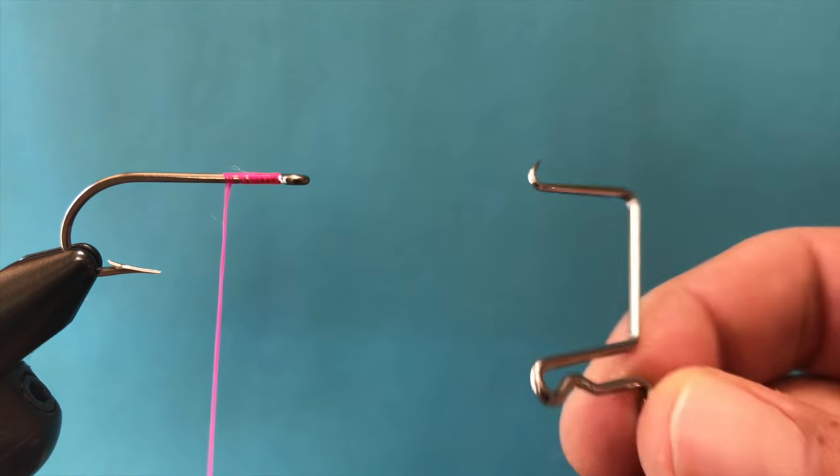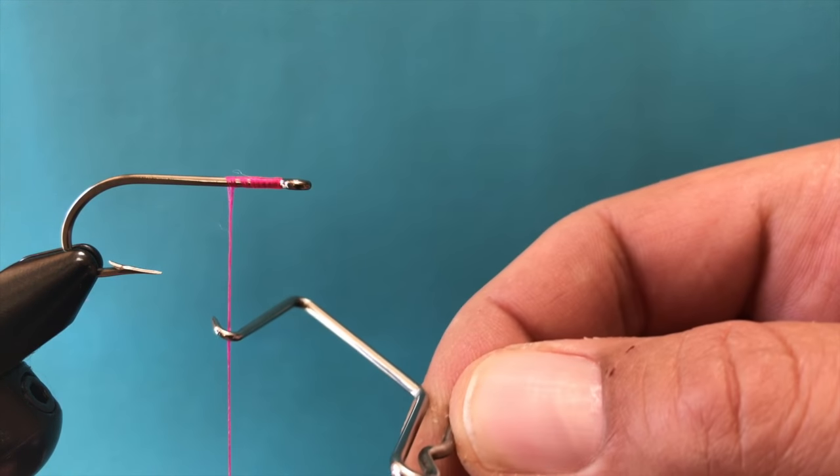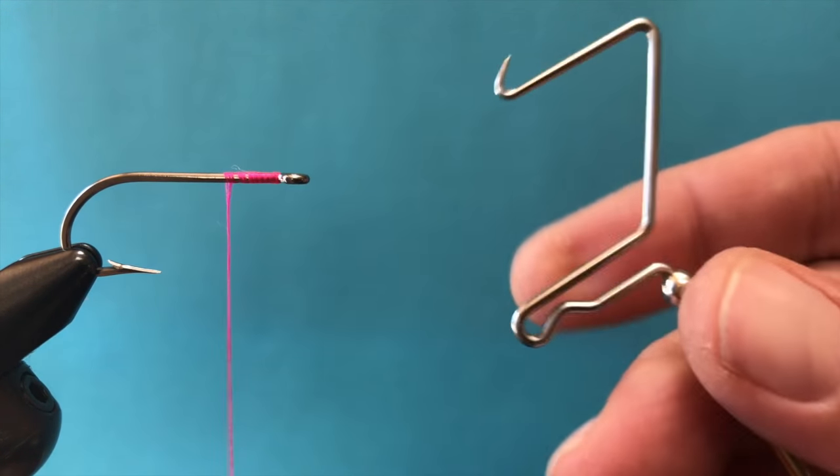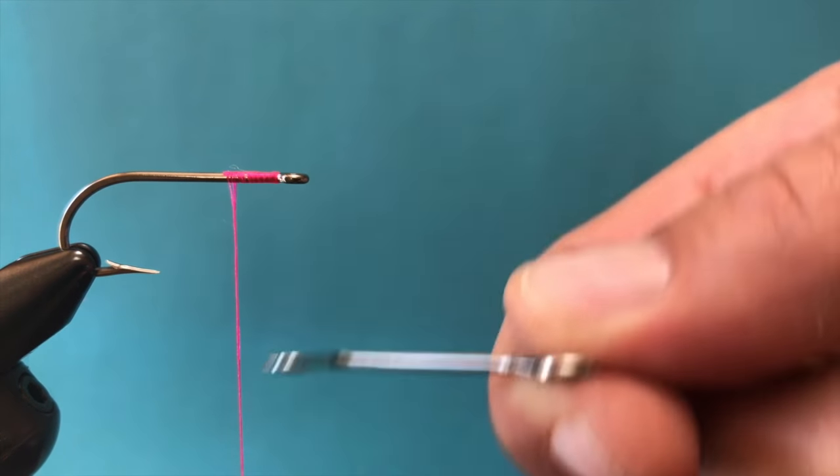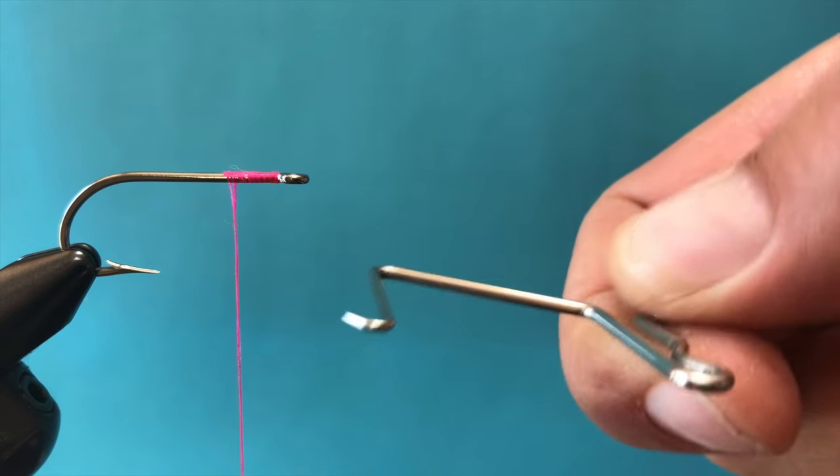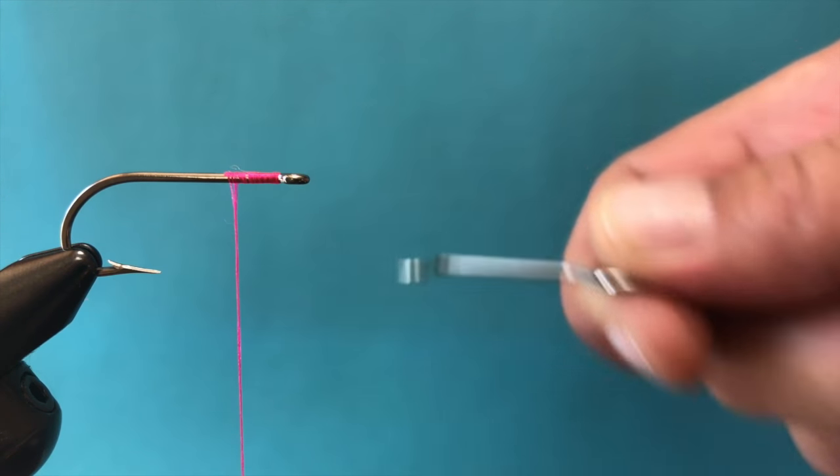Let's get right to it. Step one, take the hook on top, and you're going to catch the thread with it. Now, what I do is think of it kind of like you're throwing a frisbee. Turn the whip finisher so that it's kind of perpendicular to the hook shank, and you're going to go like this, kind of like you're throwing a frisbee.